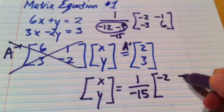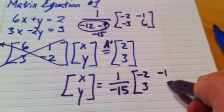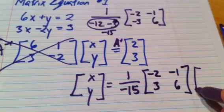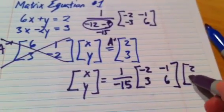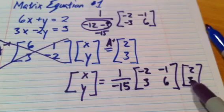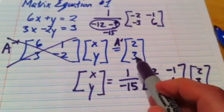Times negative 2, negative 1, 3, 6, times the 2, 3. So that's our A inverse times the answers from here, A inverse times 2, 3.